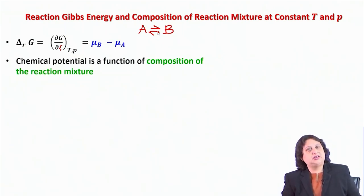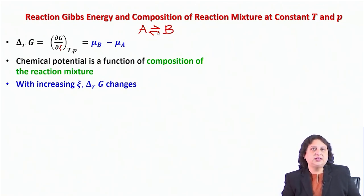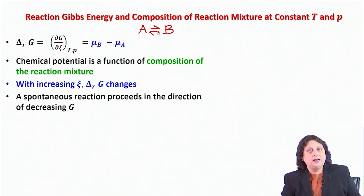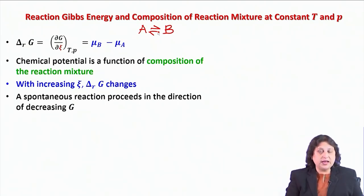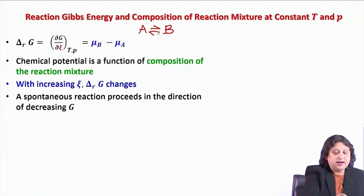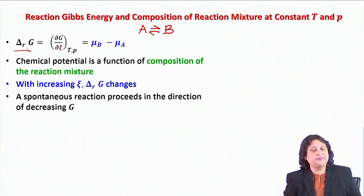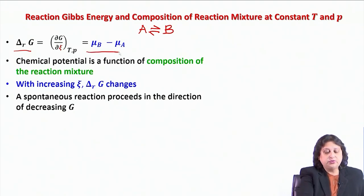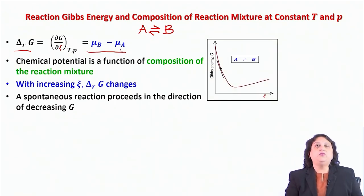The chemical potential is a function of the composition of the reaction mixture. With increasing ψ, the reaction Gibbs energy would change. A spontaneous reaction proceeds in the direction of decreasing Gibbs free energy. So, can I use ΔRG to predict the direction of spontaneous reaction instead of having to estimate the chemical potentials? And this is how we do it.